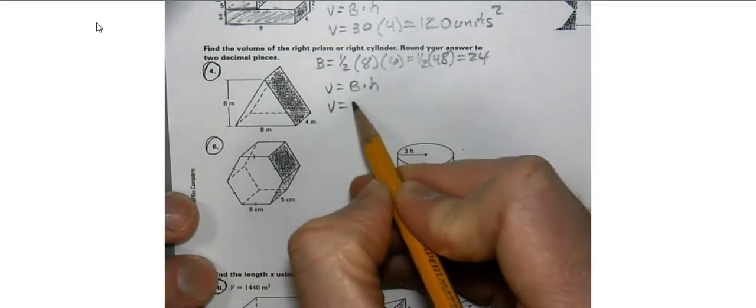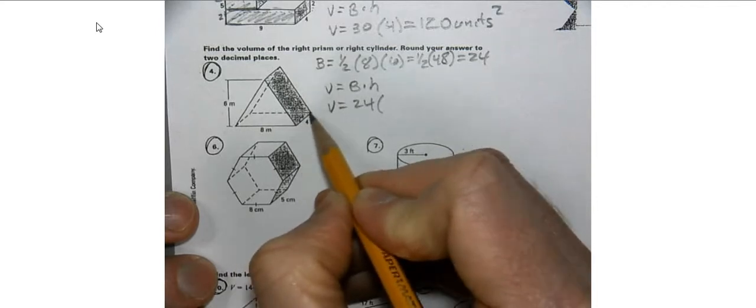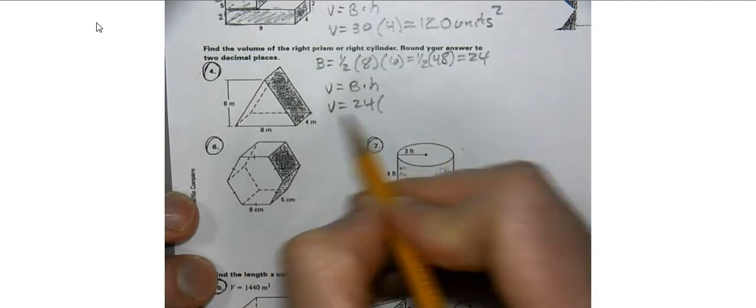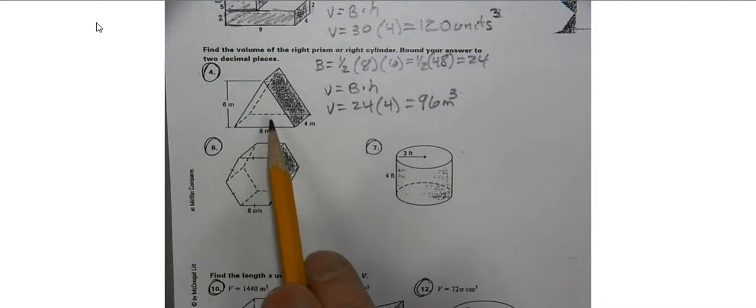The base is 24 and the height is the distance between the bases. From triangle to triangle, we have a distance of 4, so we multiply by 4 to get 96 meters cubed. Volume is three-dimensional: the area of the base, which is two-dimensional, times the distance between the bases.